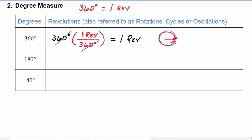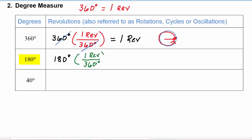If this was the initial side of the angle, the angle opened all the way around the circle. Now 180 degrees — we multiply by the conversion factor one revolution per 360 degrees. The degree symbol cancels and 180 goes into 360 twice, so we're left with one half of a revolution.